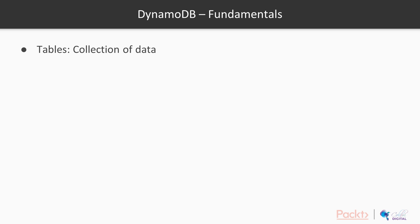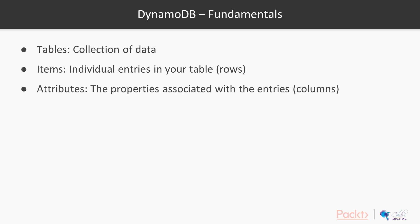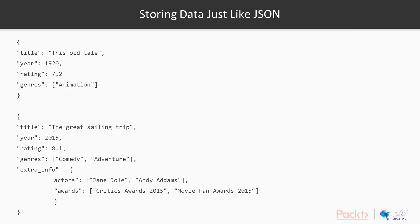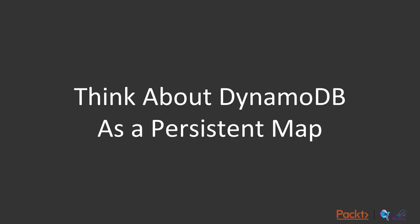We have tables. Tables are collections of data. Inside tables, we have individual entries — these are like rows. And inside items, we have attributes, which are the properties associated with the entries. Storing data is just like JSON, just like what we've been seeing in the previous video. If we had a movie table, we can have two JSON documents. They can be a completely different shape, have completely different attributes. All that matters — what's consistent — is whatever our primary key is. That could be title, it could be movie ID, it could be anything. But that's the only field that has to be there.